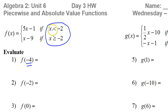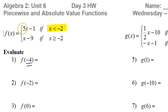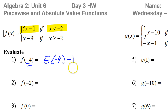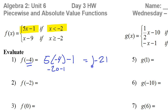Is negative 4 less than negative 2, or is negative 4 greater than or equal to negative 2? Negative 4 is less than negative 2, so we're going to be using the top part of the function. That's why we do 5 times negative 4 minus 1, which is negative 20 minus 1, so that equals negative 21. That's the answer to problem number 1.